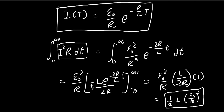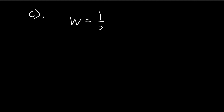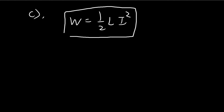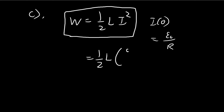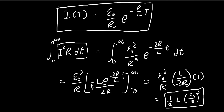For Part C, we need to check that the energy stored in the inductor equals this expression, which is what we'd expect. For Part C, we use the formula for energy stored in an inductor: ½LI². I is the initial current, which we found equals ε/R. Substituting that in, you get ½L · (ε/R)², which is exactly the same as the energy delivered to the resistor in Part B — exactly what we would expect. This is our answer to Part C.